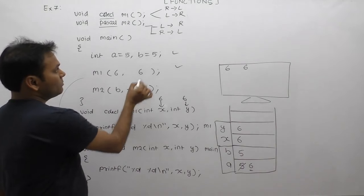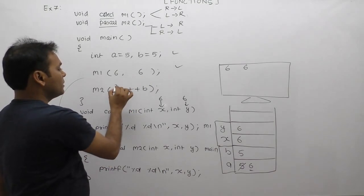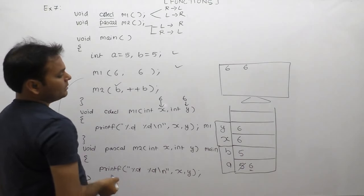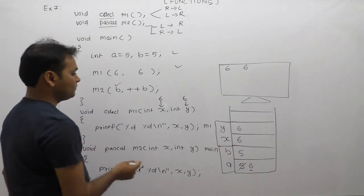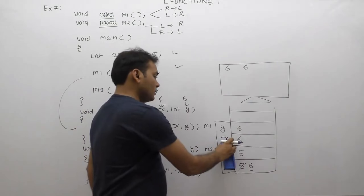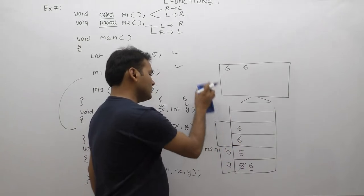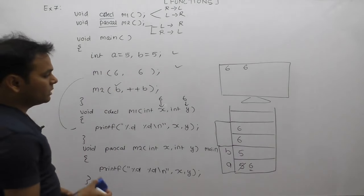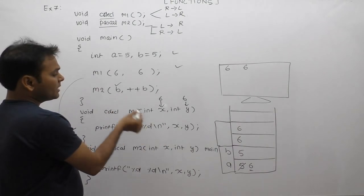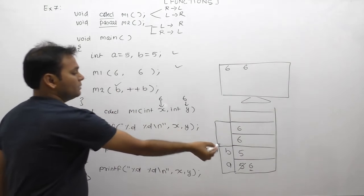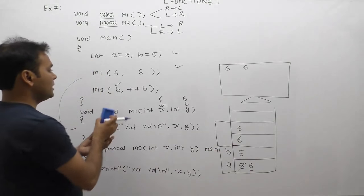According to left to right, we take the value of b. Currently b has value 5, so we pass 5.